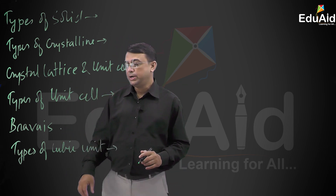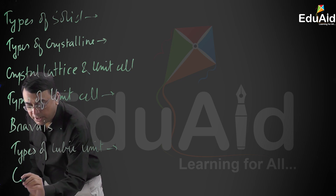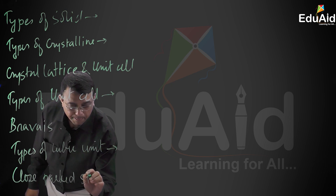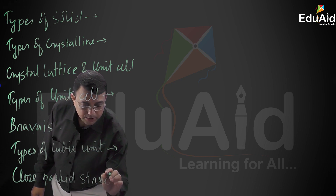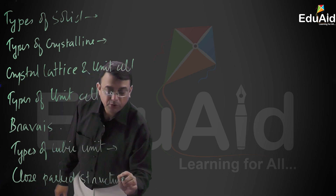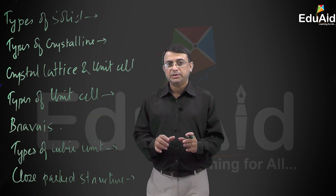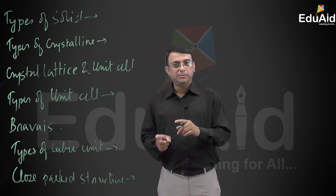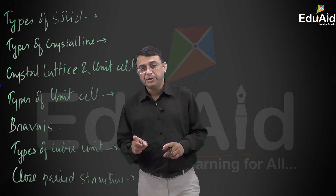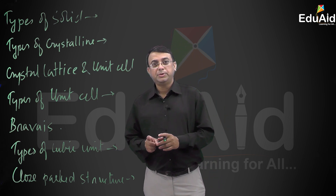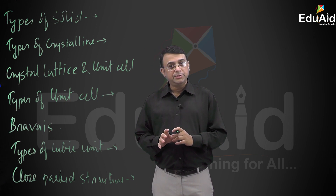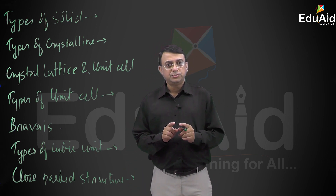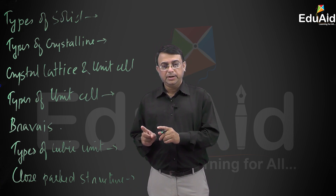The next part is the closed packed structure. Closed packed structure includes one-dimensional closed packing, two-dimensional closed packing, and three-dimensional closed packing structure. In three-dimensional closed packed structures, there are two types of closed packing: one is HCP and the other is CCP.